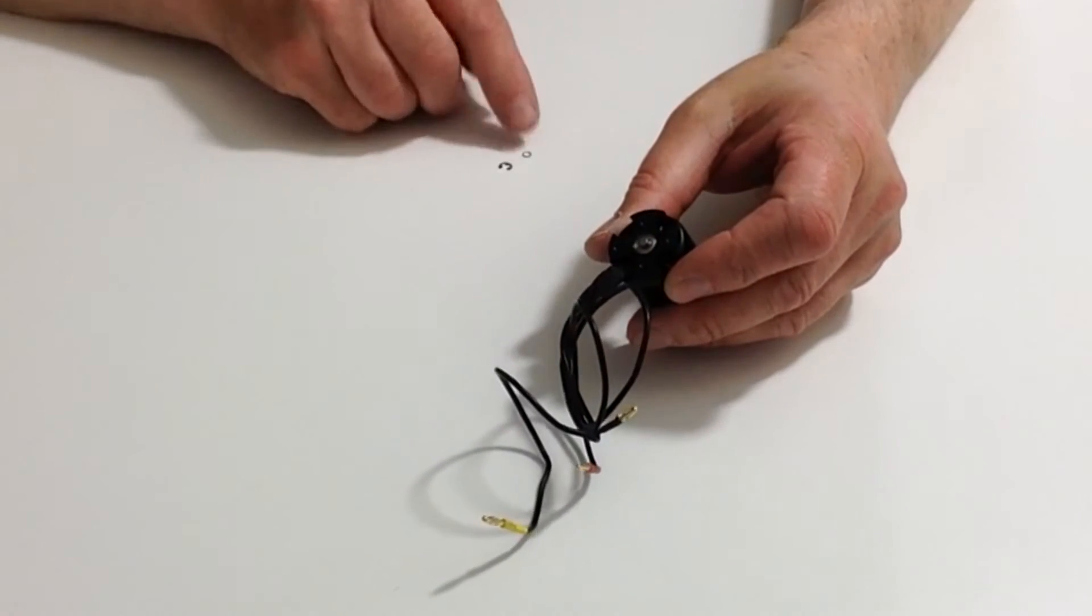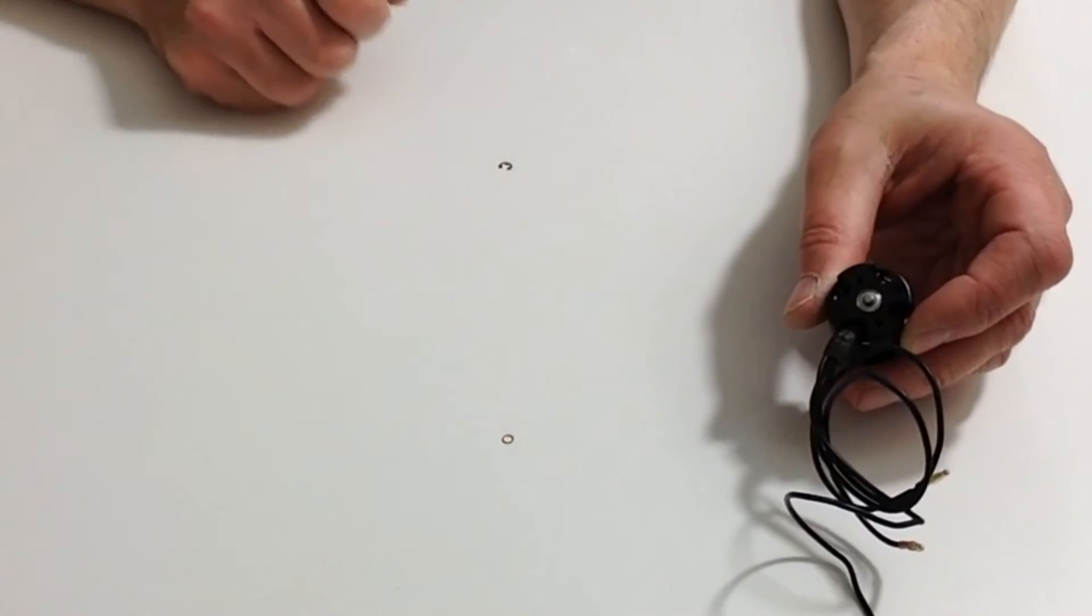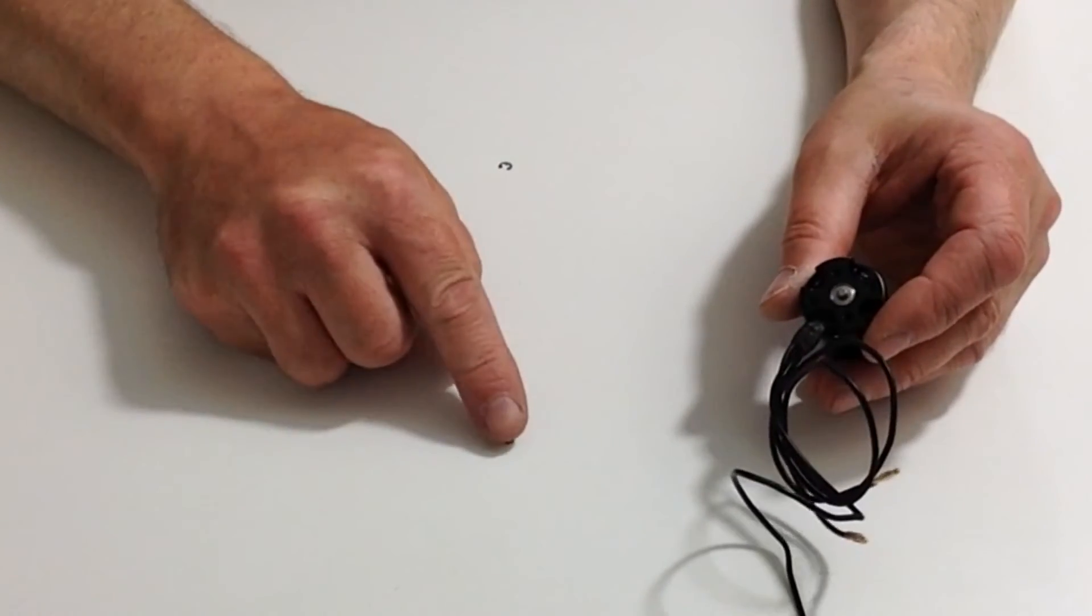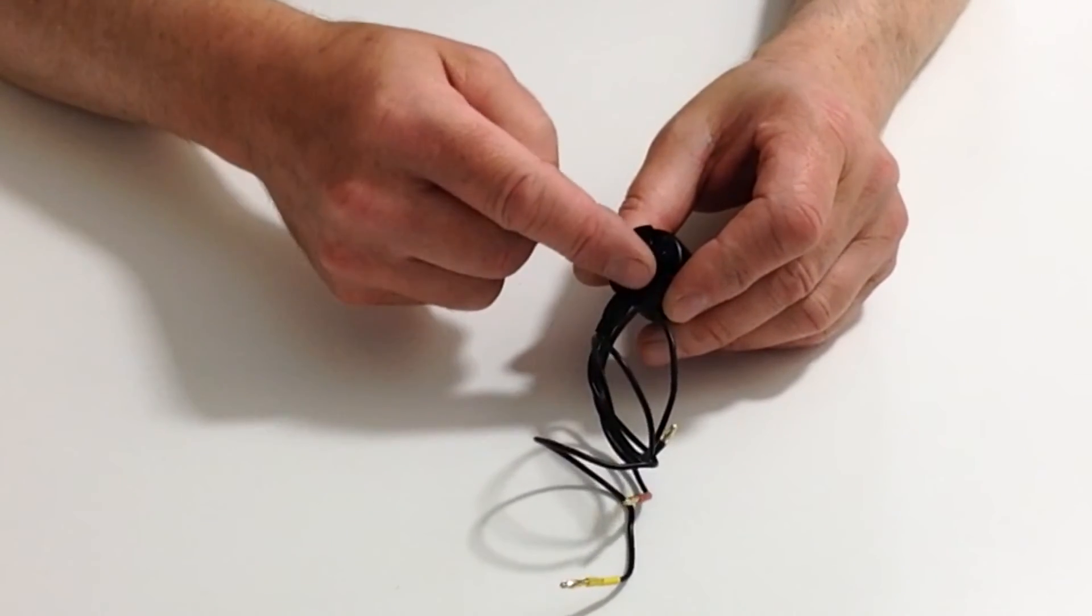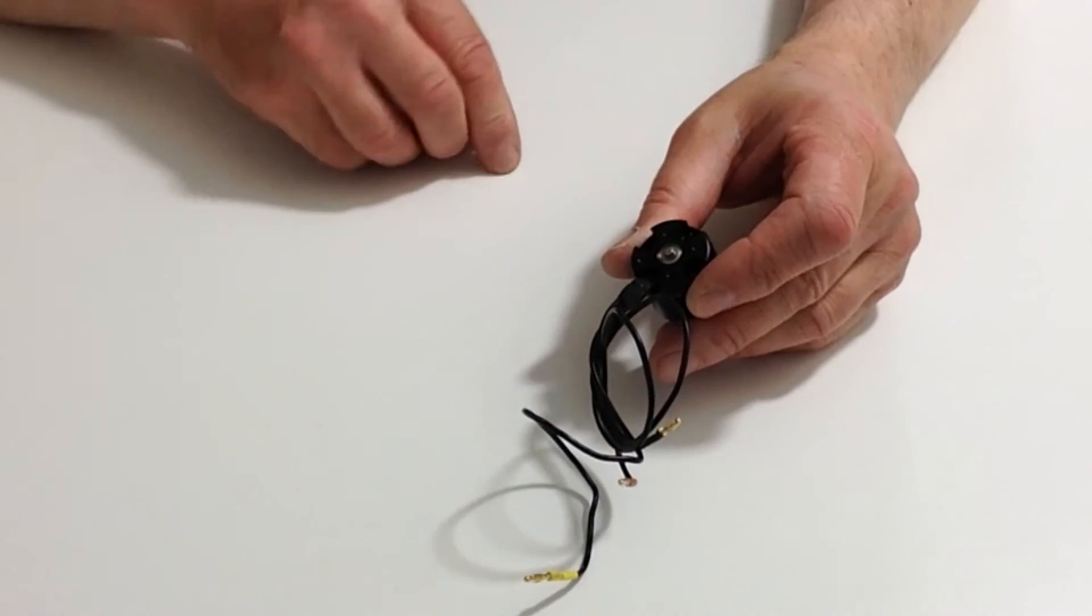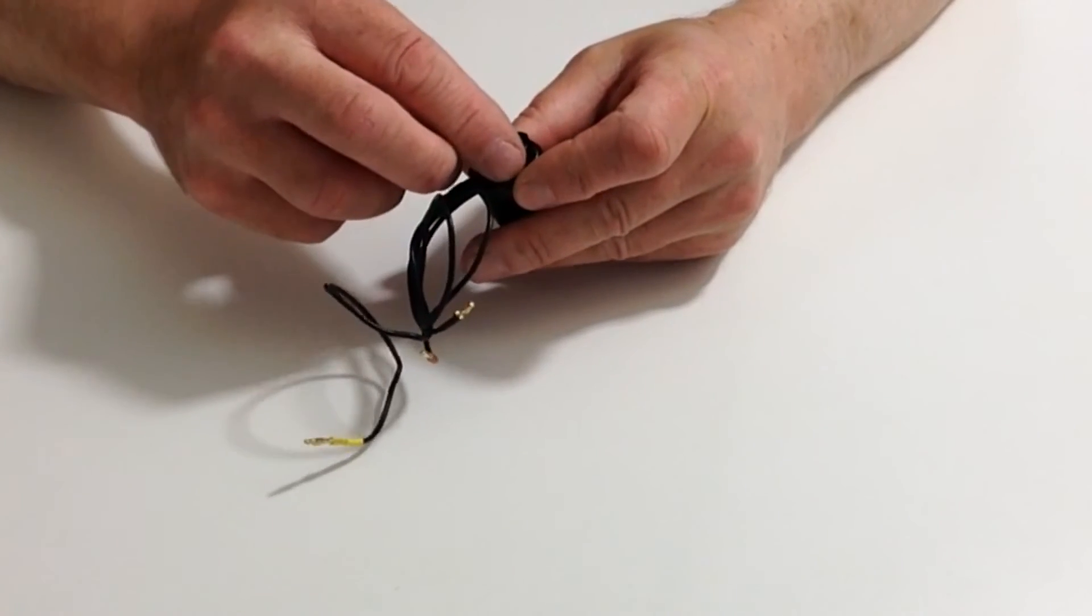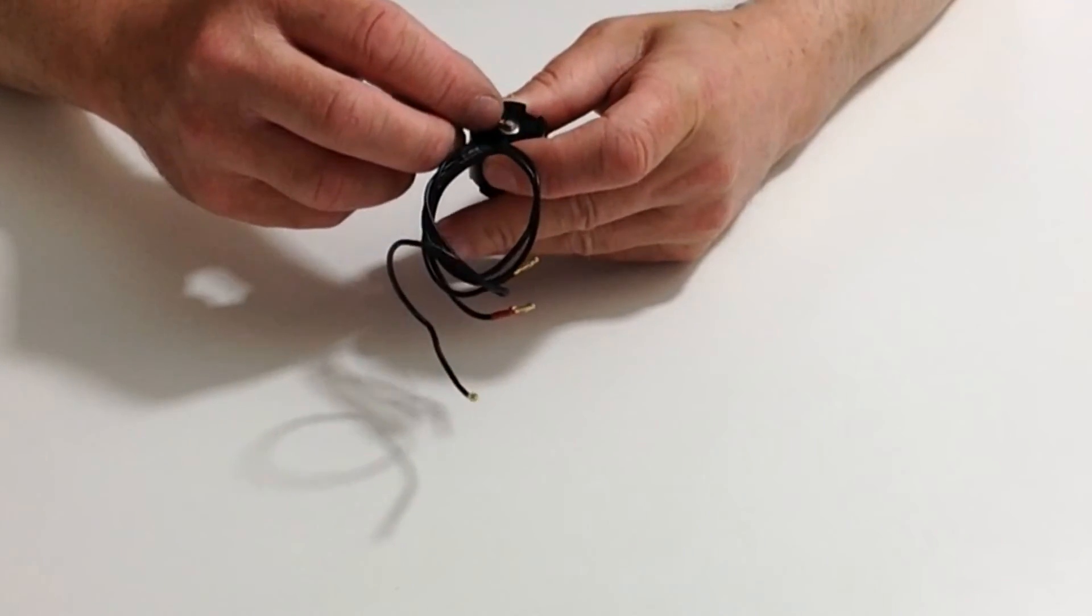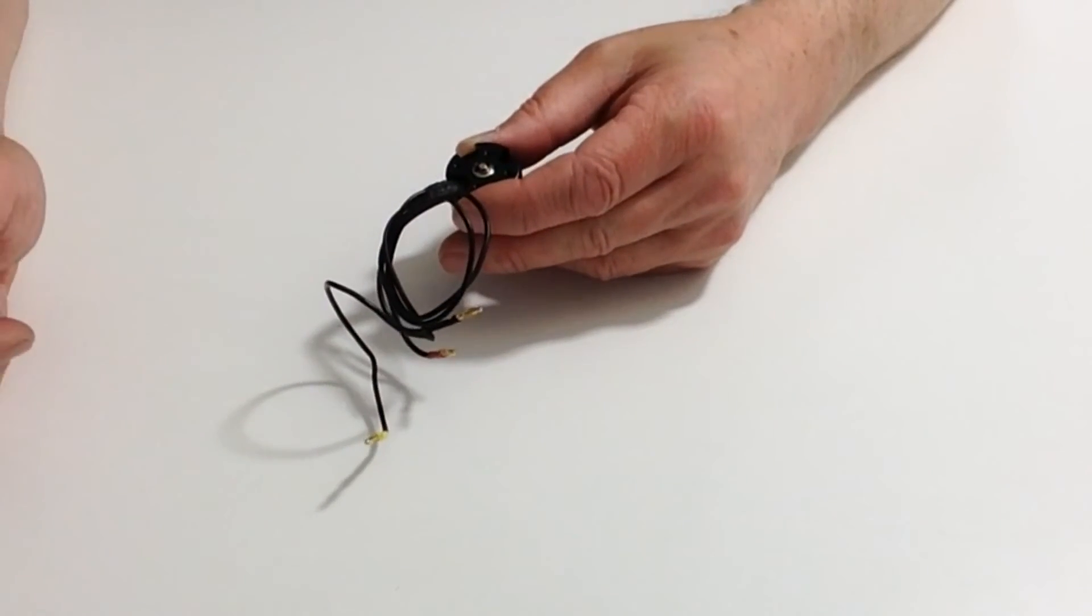Once you've done that, take the small washer that you can see here. Take that and then just gently place that over the shaft and then with a C-clip, take the C-clip, placing that over the shaft and then with some small nose pliers, pop that into position.